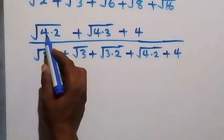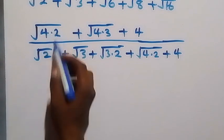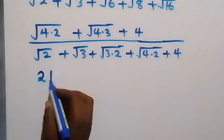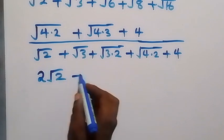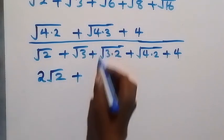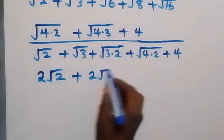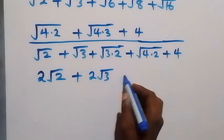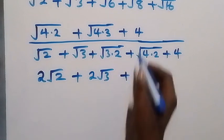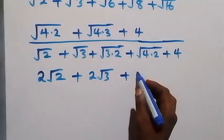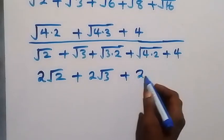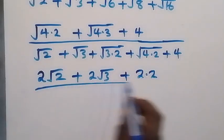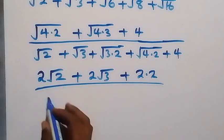Now we simplify further. We separate root 4 times root 2, and since root 4 is 2, that gives 2 root 2. Then plus 2 root 3. For the next term, we can separate 4 as 2 times 2. Then divided by the denominator.